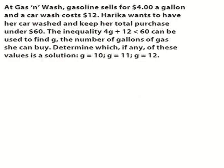All right. So we have at gas and wash, gasoline sells for $4 a gallon, and a car wash costs $12. Harika wants to have her car washed and keep her total purchase under $60. The inequality 4g plus 12 less than 60 can be used to find g, the number of gallons of gas she can buy. Determine which, if any of these values, is a solution: g equaling 10, g equaling 11, or g equaling 12. So we first have to solve for g before we can determine if 10, 11, or 12 work. Okay, so why don't you pause and solve for g and graph it, and then unpause and see if you got the same solution I did.